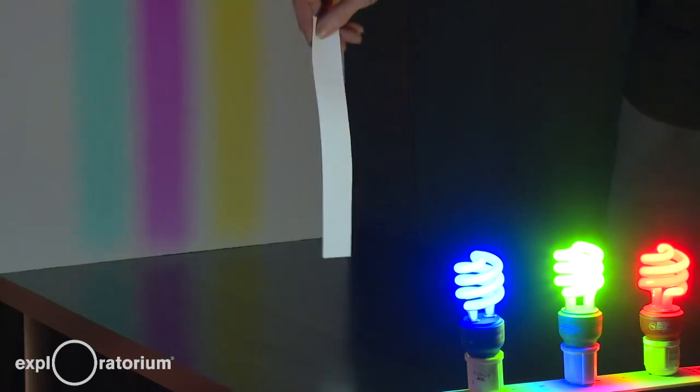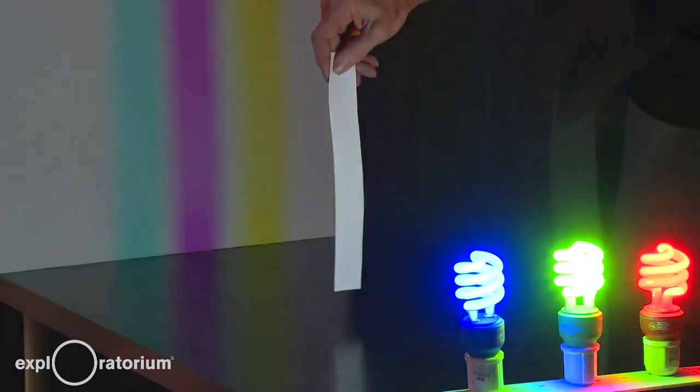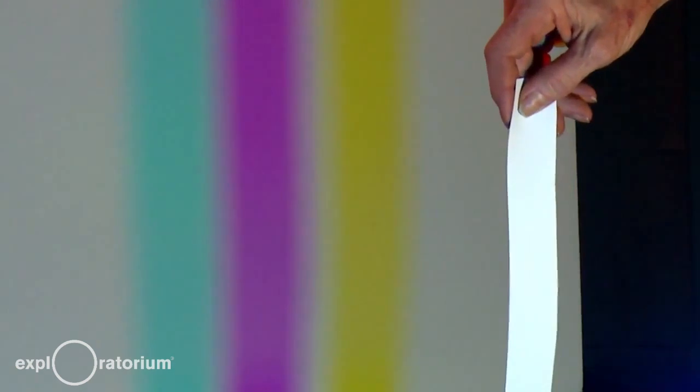Try making shadows with a wider object, such as this piece of paper. It will make magenta, cyan, and yellow shadows, which we now understand.